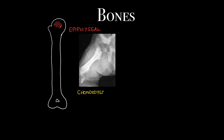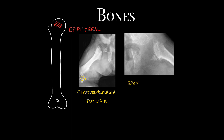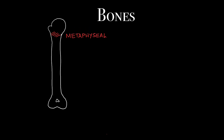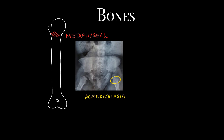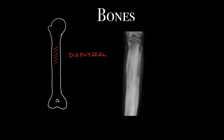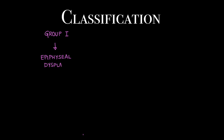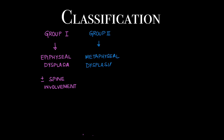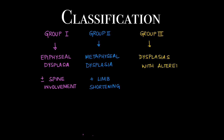Moving to B — that is Bones. Epiphyseal location can be seen in conditions like chondrodysplasia punctata, where the epiphyses are punctated, and in spondyloepiphyseal dysplasia. Metaphyseal involvement can be seen in achondroplasia. Diaphyseal involvement can be seen in conditions like progressive diaphyseal dysplasia, also known as Camurati-Engelmann disease. All dysplasias that match X-ray features are put into groups. Group 1 contains epiphyseal dysplasia with or without spine involvement. Group 2 contains metaphyseal dysplasia with or without limb shortening. Group 3 contains dysplasia with altered bone densities. Group 4 contains miscellaneous disorders.